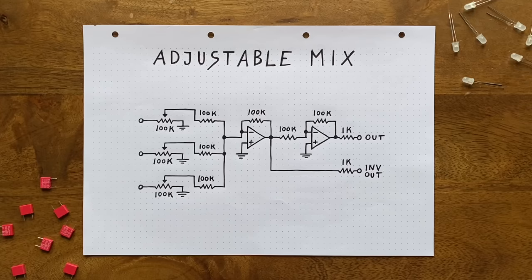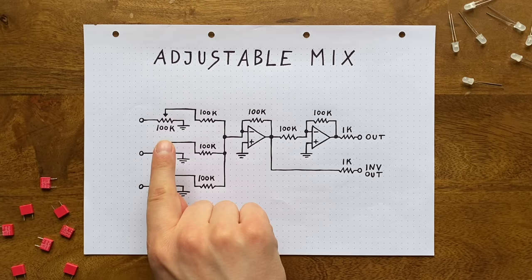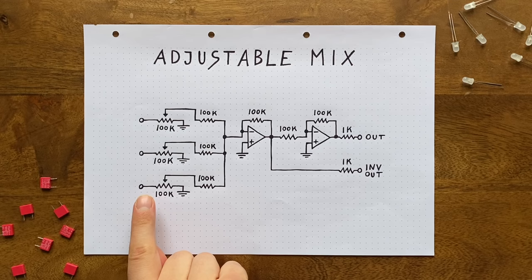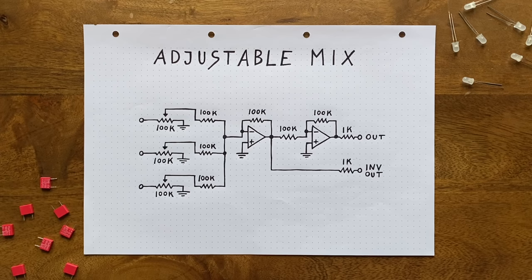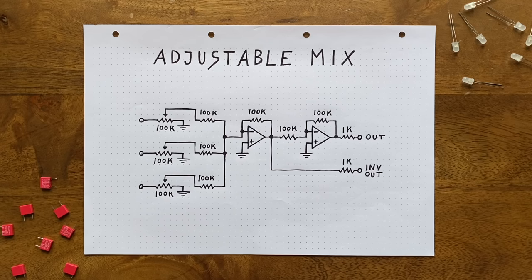And while our circuit does work pretty well now, it's still missing a key feature: knobs to adjust the individual input levels. Thankfully, adding them is fairly trivial. We just need to set up three potentiometers as variable voltage dividers, also called attenuators, between our input sockets and the 100k resistors. The idea here is this. If we send an audio signal through a standard voltage divider, we're able to pick up a scaled-down version of that audio signal at the divider's output. The factor by which it's scaled down depends on the relation between the two resistors.